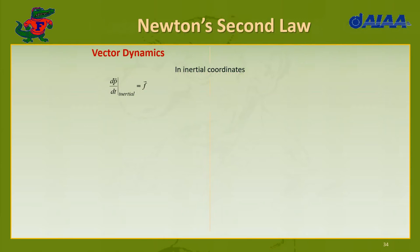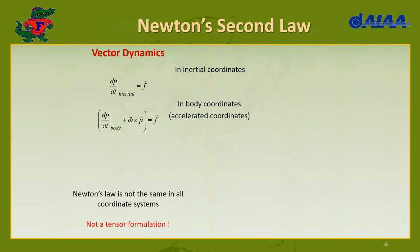Let's get specific. In vector dynamics, we have the time rate of change of linear momentum with respect to inertial coordinates equals the externally applied forces. If we want to express that law in body coordinates, we get an extra term: W cross multiplied by P. That adds an extra term in this presentation. So Newton's law is not the same in all coordinate systems, and because of that, it is not a tensor formulation.